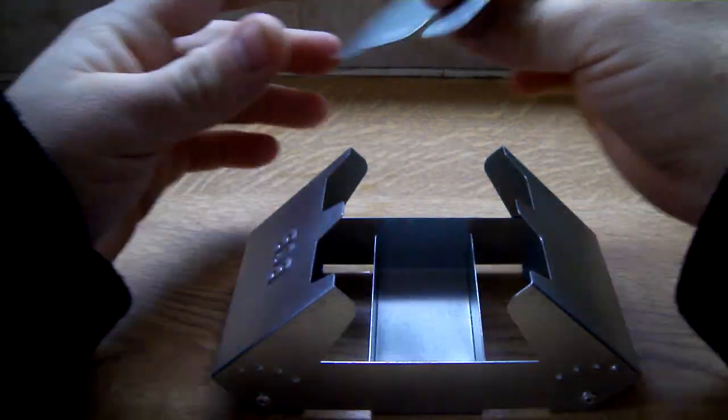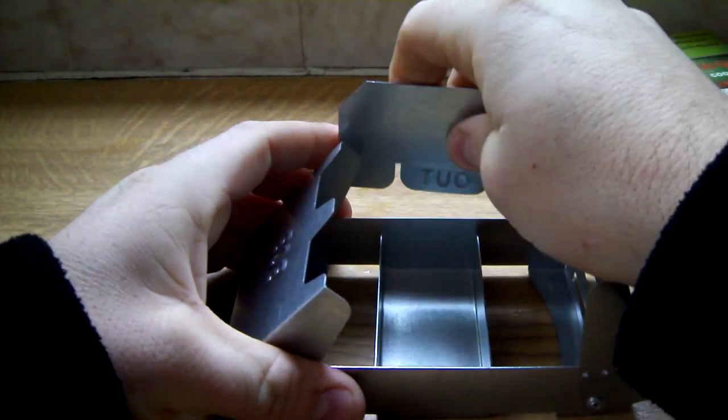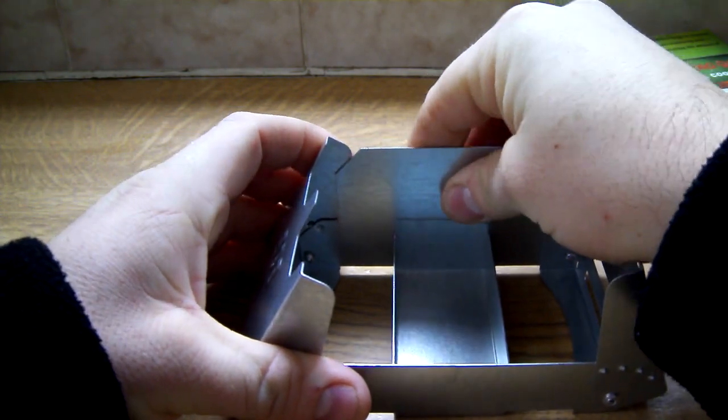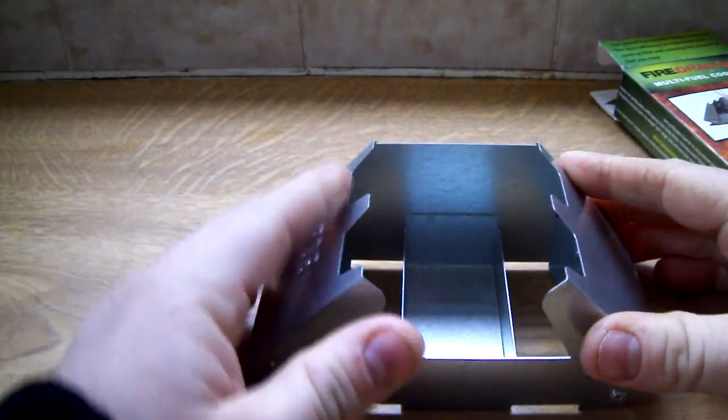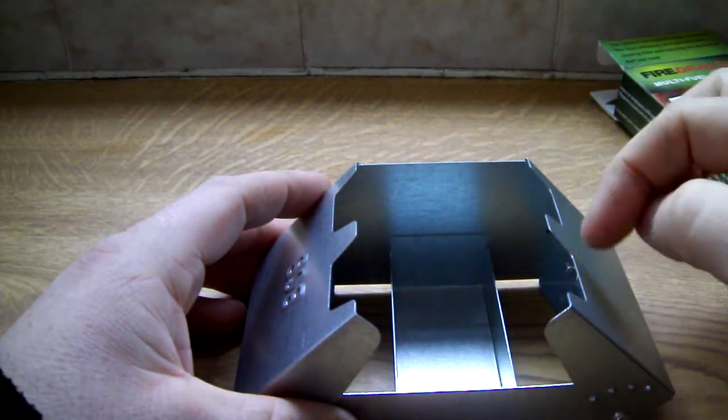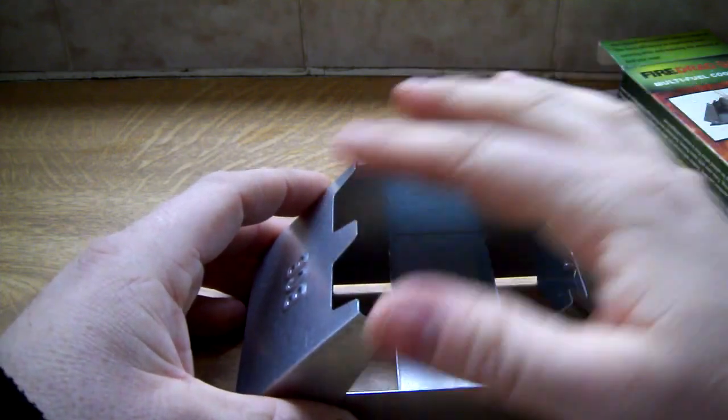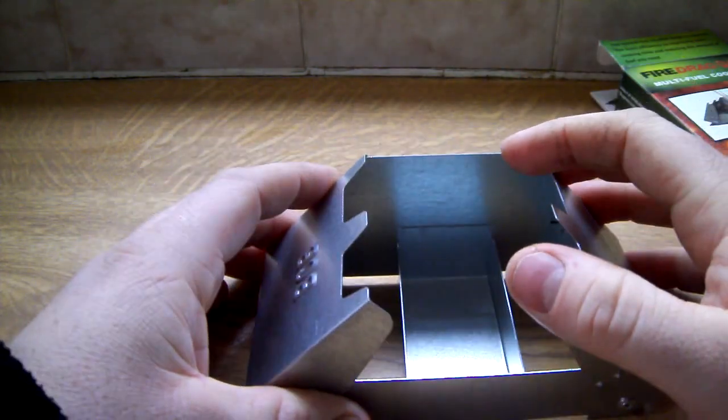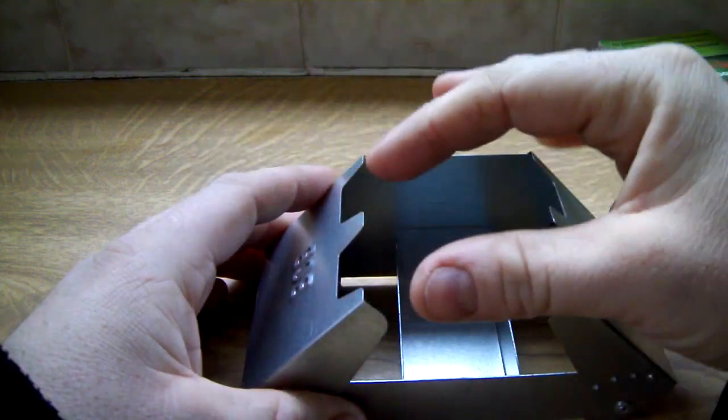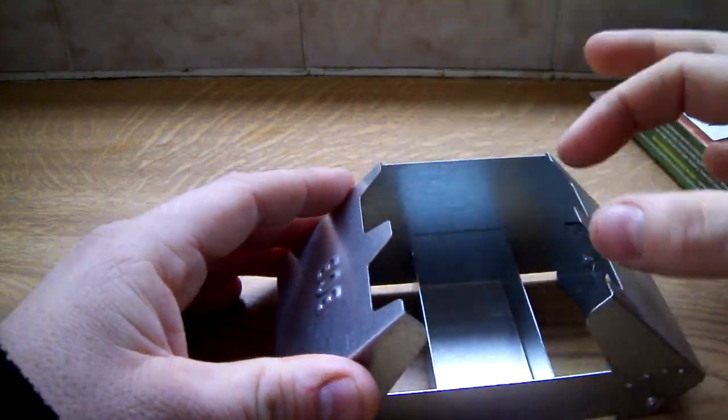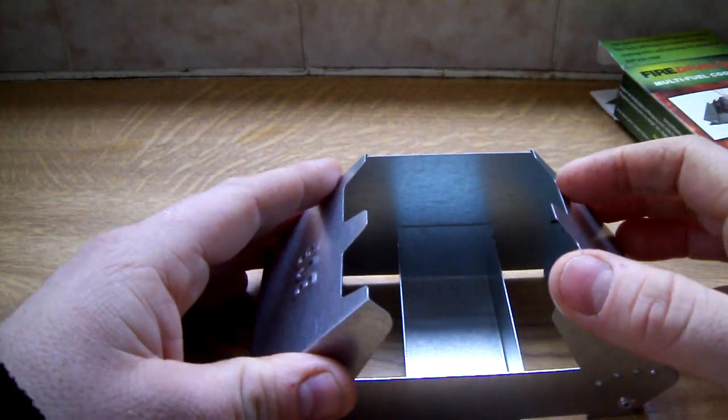Say the wind's coming this way and you slide this in. Close it up. As long as your pot could reach over this gap here, or you could get a little grill put over it, or even a couple of tent pegs. That would be fine I think.